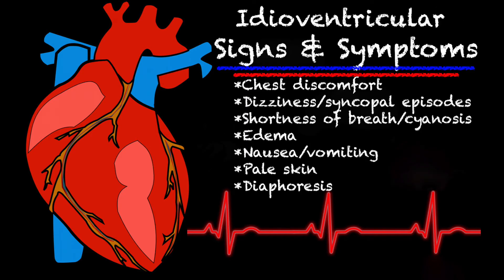The signs and symptoms of an idioventricular rhythm can include chest discomfort, dizziness, syncope, shortness of breath. The patient may be cyanotic, there may be edema, nausea, vomiting, pale skin, and diaphoresis. I included edema mainly because some of the conditions that can lead to an idioventricular rhythm — like cardiomyopathy, heart disease, congenital heart defects — can have their own symptoms that may be associated with them and cause the idioventricular rhythm.